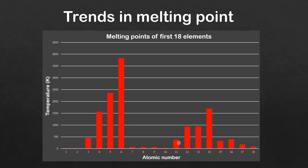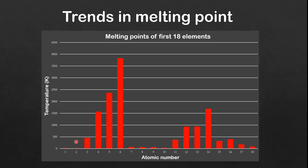If we look at the trend across Period 3, starting with sodium, you can see that the melting point increases to silicon where we see the peak, and then it decreases for phosphorus, with a slight increase for sulfur, and then a decrease for chlorine and argon.